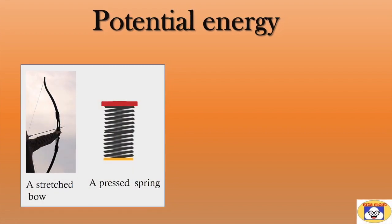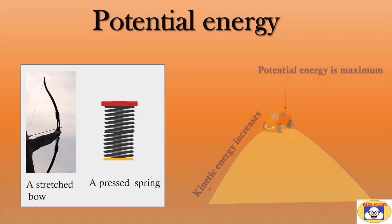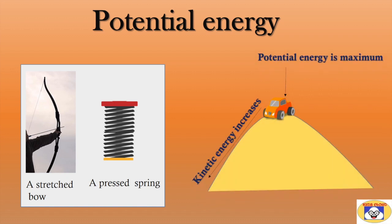Potential energy is due to the position or configuration of a substance or a device. A stretched bow or a pressed spring are examples of potential energy. We can explain the interconversion of potential energy into kinetic energy with the example of a car resting on top of a hill. A car resting on top of a hill possesses maximum potential energy due to its position, and at this point its kinetic energy is zero. As it starts to come down the hill, the potential energy slowly decreases and gets converted into the same amount of kinetic energy. A similar interconversion of energy can be shown with a ball lifted to a height and released after some time.